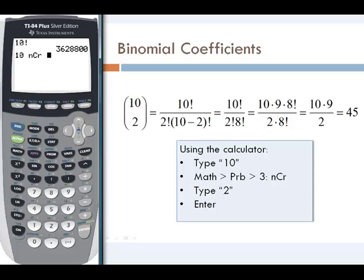And since we're doing 10 choose 2, I will enter 2, and we'll press enter. The calculator gives us 45 as the computation, which matches if we had computed by hand.